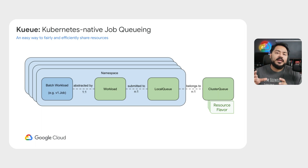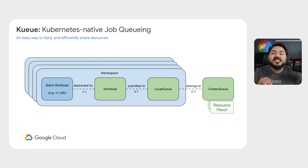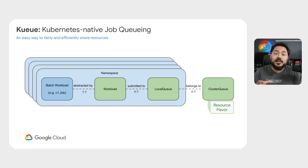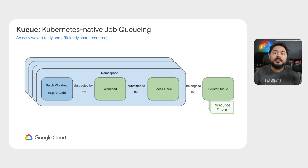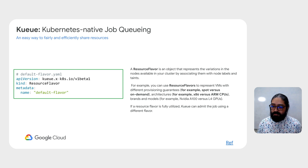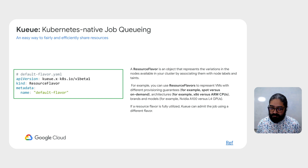At a high level, the Kueue architecture looks something like this. Your workload is abstracted by a queue concept called workload, which is submitted to a local queue. All of these are namespace-bound. That local queue belongs to a cluster queue, which is a global resource to your Kubernetes cluster. Each cluster queue has ideas of certain resource flavors, which determines the type of resources that cluster queue has access to. A resource flavor is a queue-level object that represents different kinds of resources that are available on your cluster.